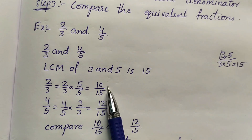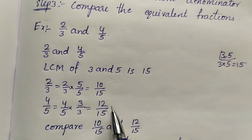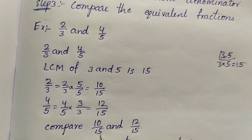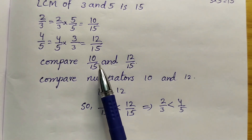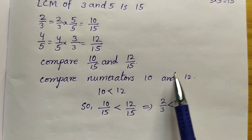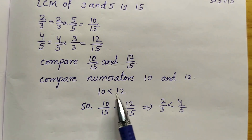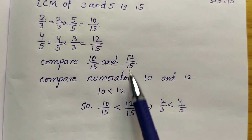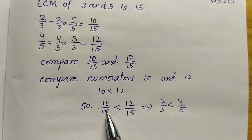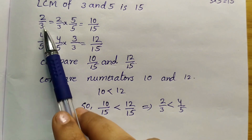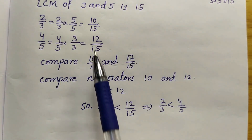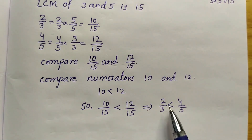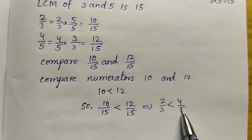Now we have to compare 10 by 15 and 12 by 15. We have the same denominators, so compare the numerators 10 and 12 — 10 is less than 12. So 10 by 15 is less than 12 by 15. 10 by 15 is the equivalent fraction of 2 by 3. So 2 by 3 is less than 12 by 15. 12 by 15 is the equivalent fraction of 4 by 5. So 2 by 3 is less than 4 by 5.